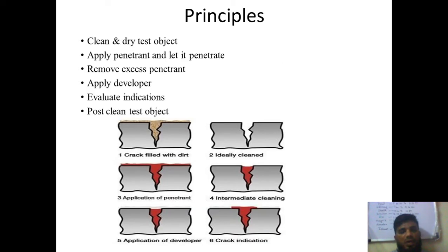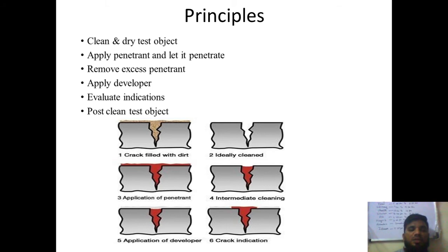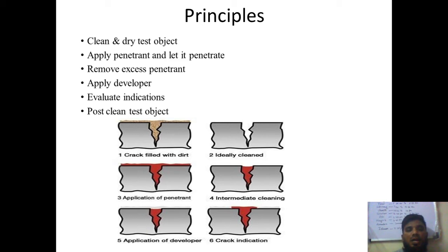The first step in the process is to clean the surface. Before applying the penetrant, you must clean the surface to remove dirt particles. You clean and dry the test object on which you want to see the cracks. Then you apply the penetrant and let it sit for a period called the dwell time. During dwell time, the penetrant flows through the porosity — that is, the cracks present on the surface of the material.